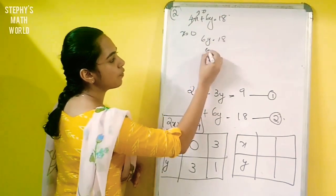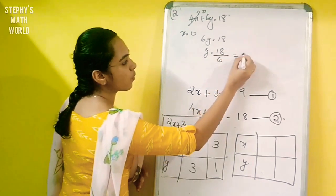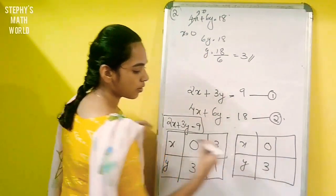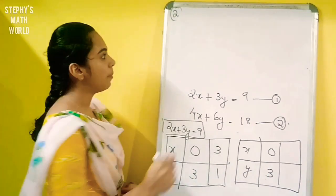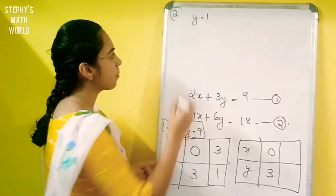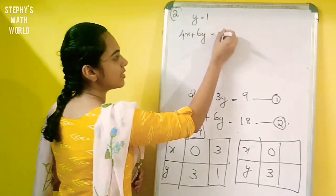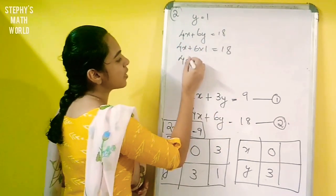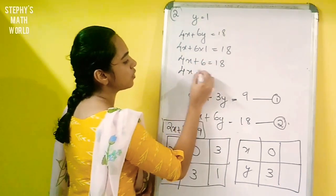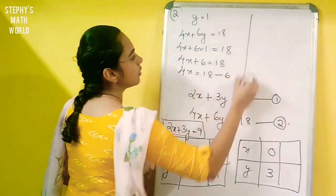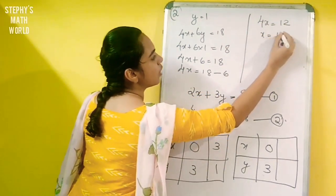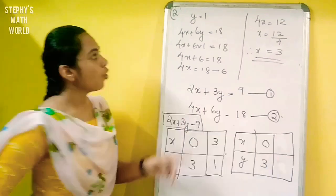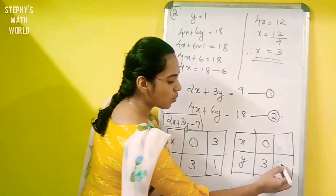For equation 2: 4x plus 6y is equal to 18. When x is equal to 0, 6y is equal to 18, so y is equal to 18 divided by 6, which is equal to 3. Now when y is equal to 1, 4x plus 6 into 1 is equal to 18, so 4x plus 6 is equal to 18, giving 4x equal to 12, so x is equal to 12 by 4, which is x equal to 3.